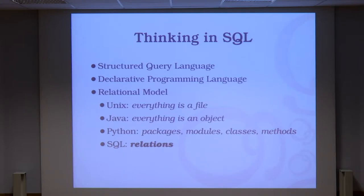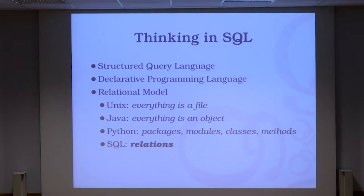In SQL, everything is declarative. In Python you have packages, modules, classes — that's the kind of thing you think about in Python. How do you think in SQL? Well, you need to think about relations. What are relations in SQL? In mathematics, a relation is a set of elements that have the same properties. In SQL, a relation is a set of data that share the same domain attributes and values. Basically it's a tuple — a tuple with T meaning the number of elements. Each element has a known data type. The output of any SELECT query is going to be a relation.